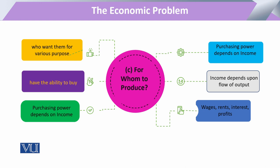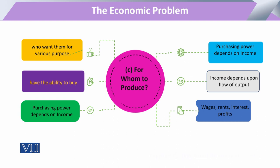Consumer کی income اس کے flow of output پر depend کرتی ہے۔ وہ wages کے ذریعے، کرایہ لے کر، bank interest سے، یا تجارت کے منافع سے income حاصل کرتا ہے — یہی اس کی purchasing power کو decide کرتی ہے۔ ان تین decisions — what to produce، how to produce، اور for whom to produce — کی بنیاد پر ہماری تمام economic problems accumulate ہوتی ہیں۔